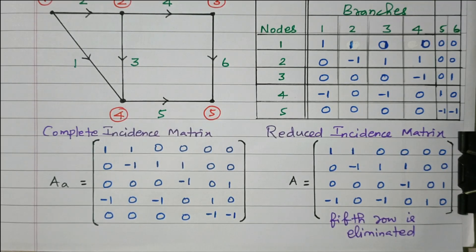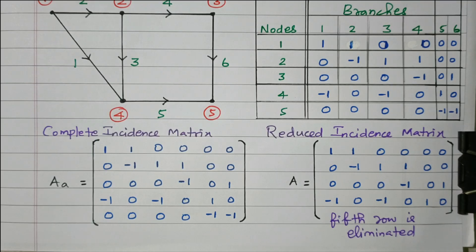In this video we discussed how to frame the reduced incident matrix. We solved one problem: from an oriented graph, first the complete incident matrix is framed, then the fifth row is eliminated to get the reduced incident matrix. We can eliminate any row — first, second, or any row. Subscribe to the channel for more videos and notifications. Soft copy of this material is available in the drive; the link is given in the description box. Thank you for listening.